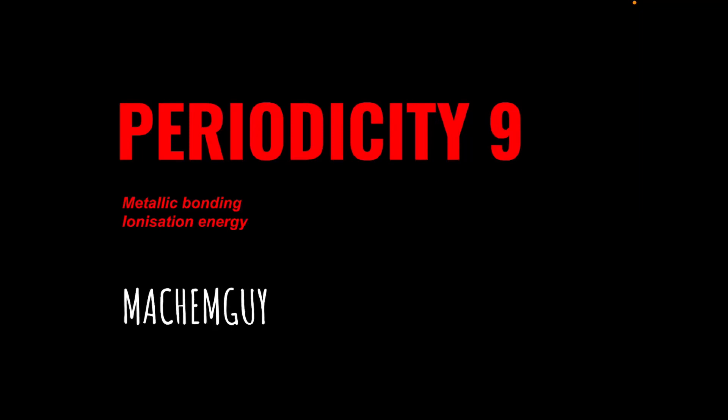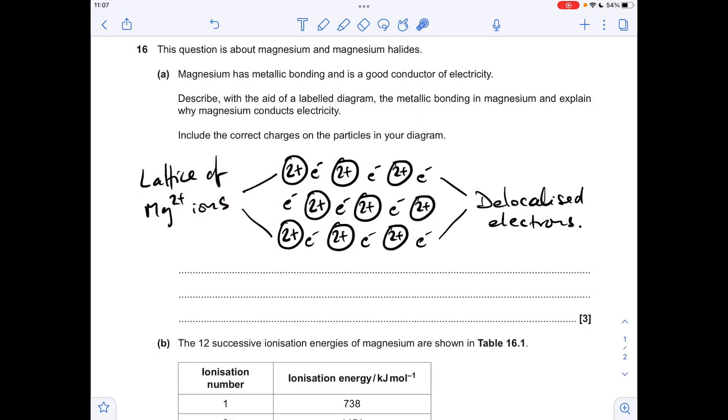I've got another question for the periodicity topic. This question covers metallic bonding and ionization energy. As always, the link to the question is in the description of the video if you wanted to try it first. Okay, so let's make a start.